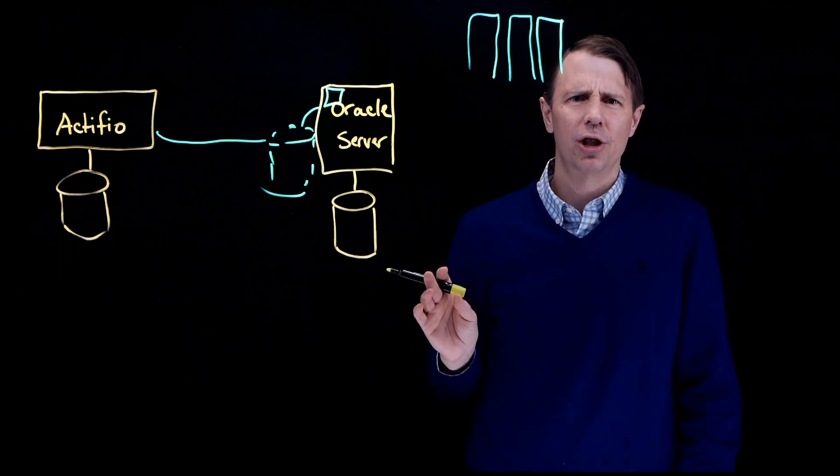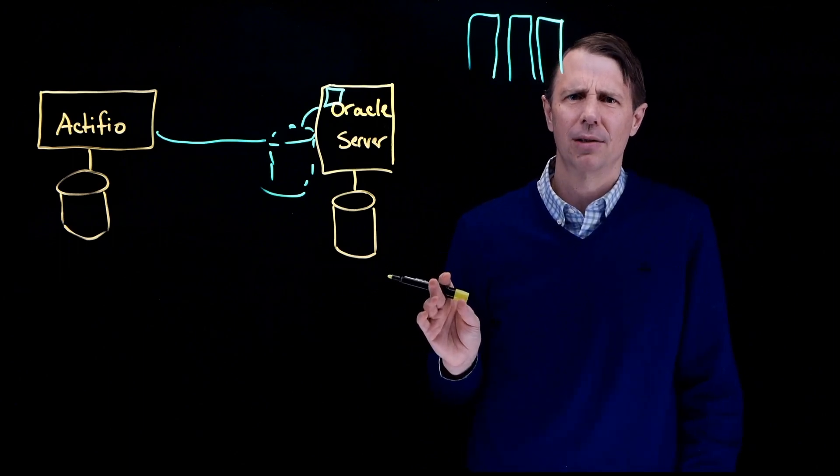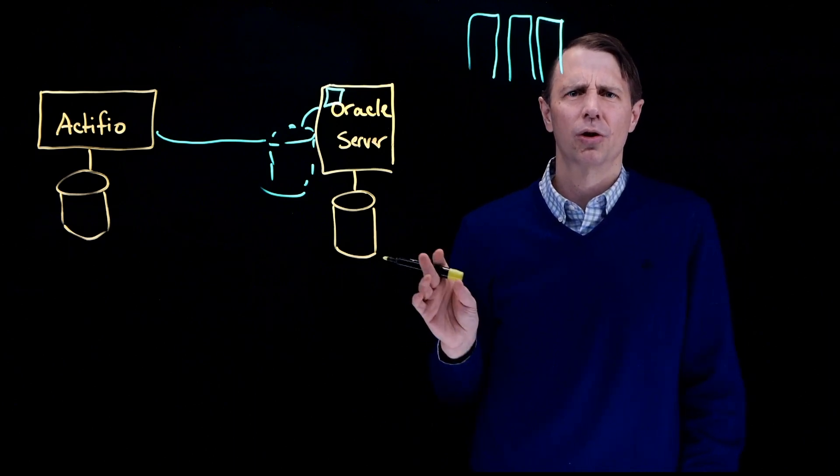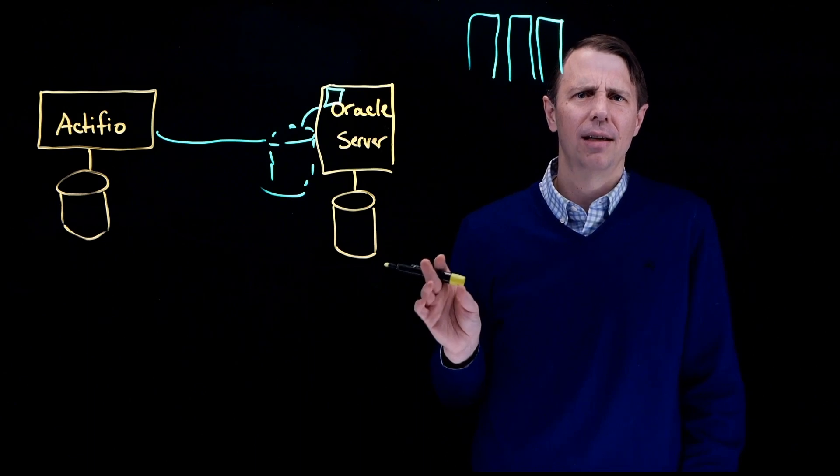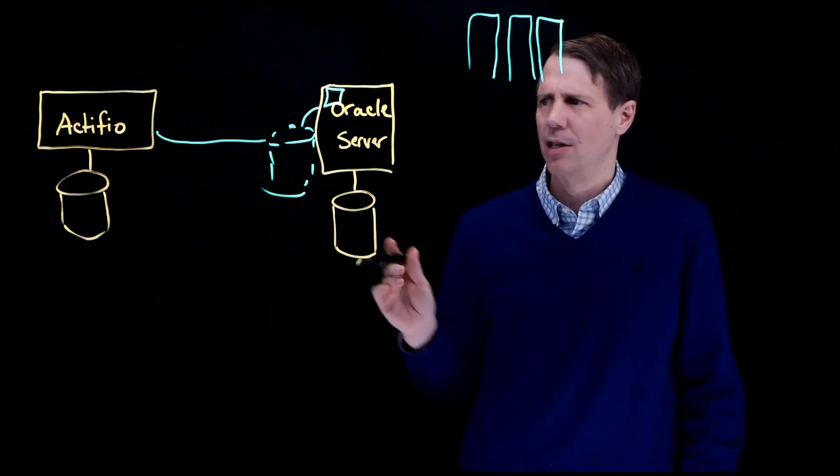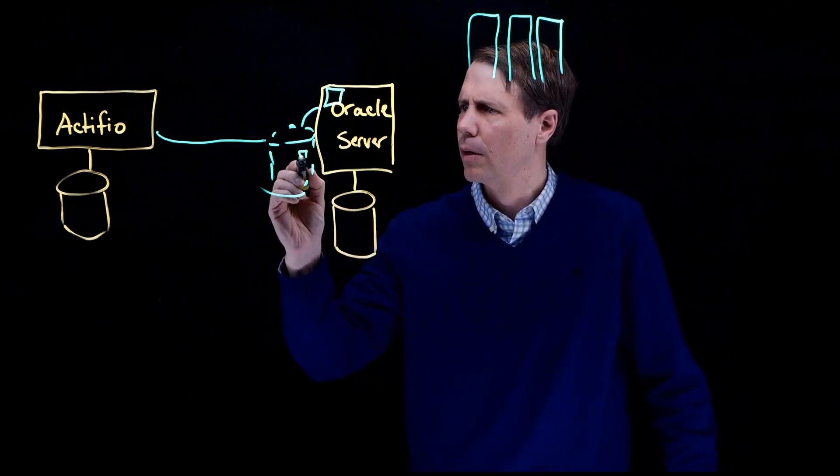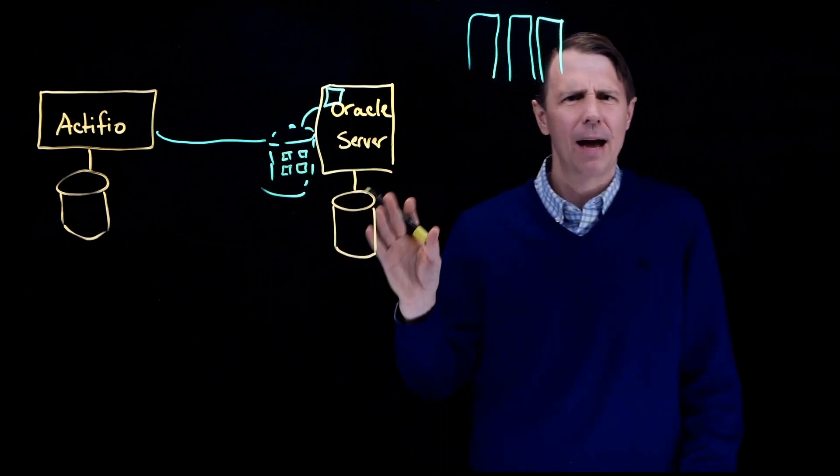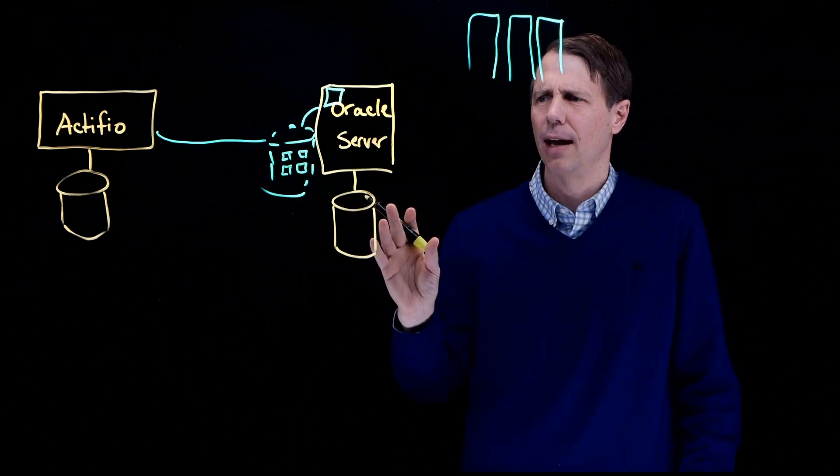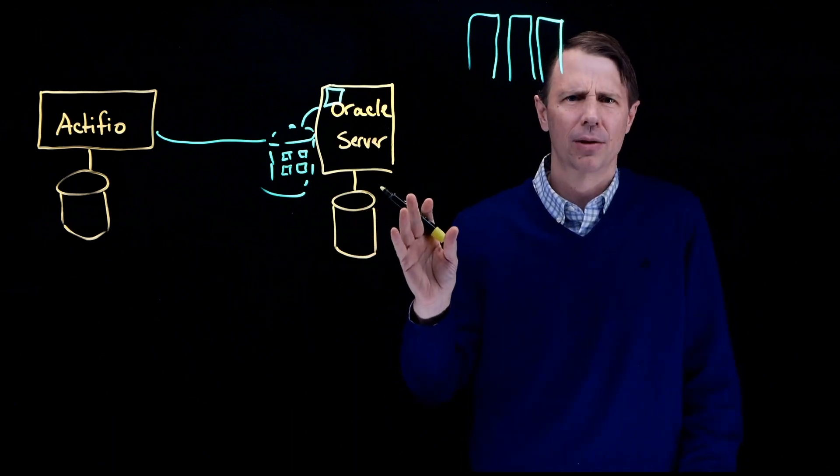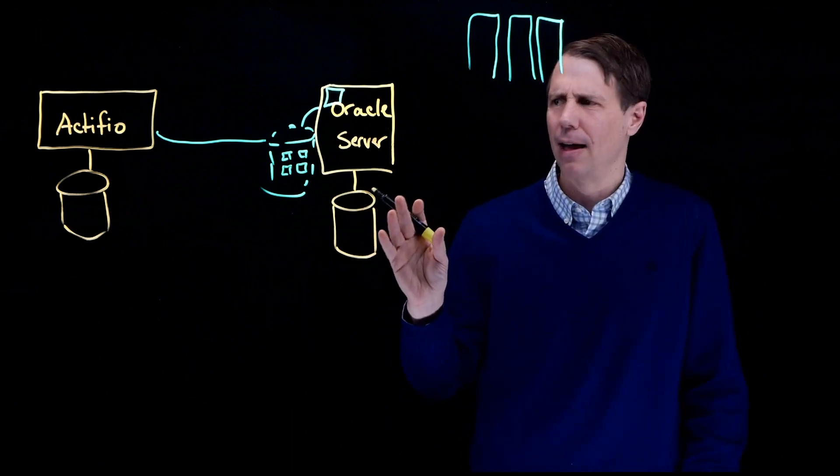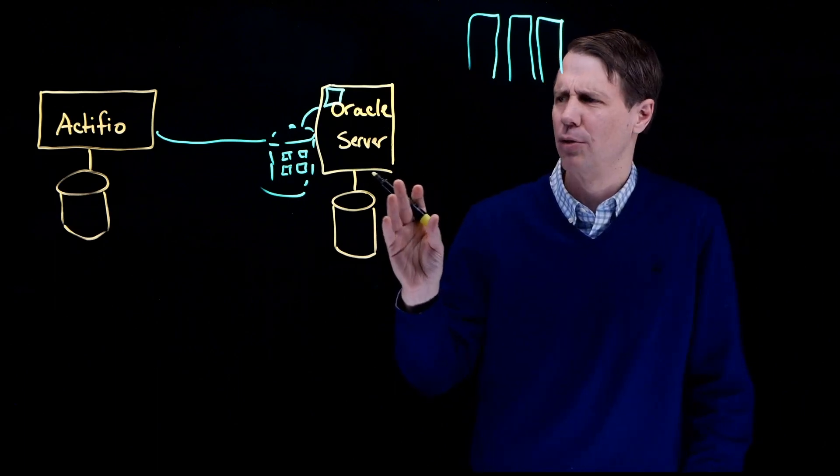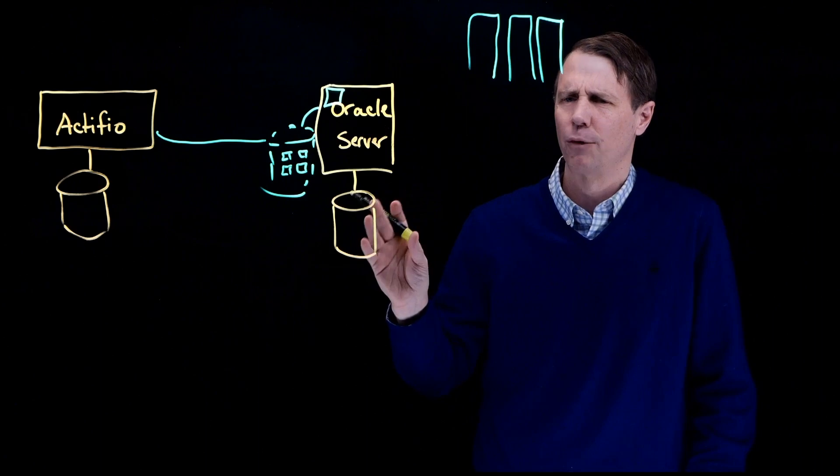The connector leverages the RMAN incremental API and incremental merge functions to quiesce Oracle and get the blocks that have changed since the last backup. It is important to recognize that a full backup only happens once and never occurs again. The RMAN incremental merge and incremental APIs ensure that Actifio only captures changed blocks after the first full.